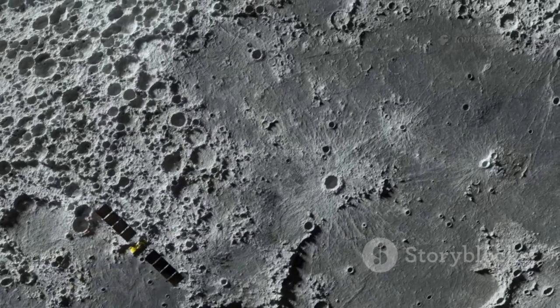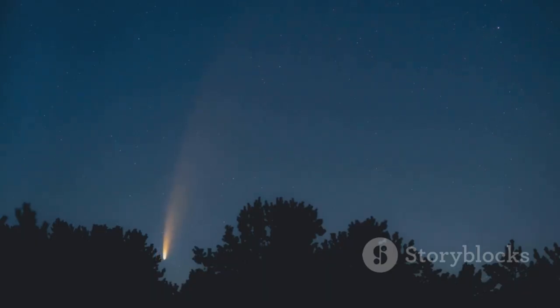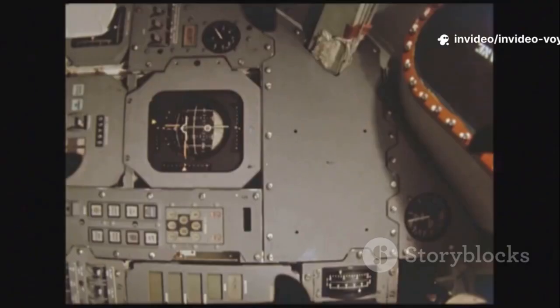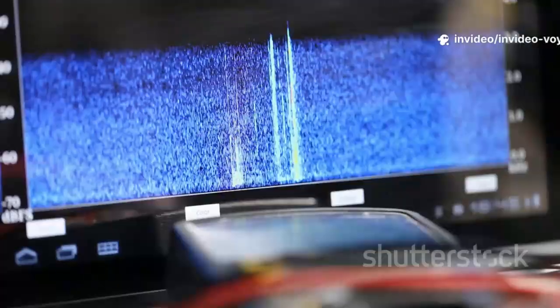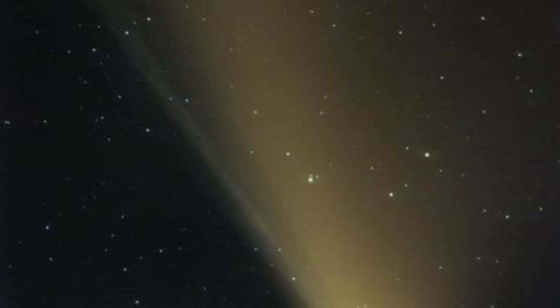A comet is essentially a dirty snowball. As it warms, it releases gas, it releases dust, forming a tail. Voyager 2 saw no coma or tail, no signs of dust impacts or outgassing. The object appeared clean. That made the comet idea very unlikely.